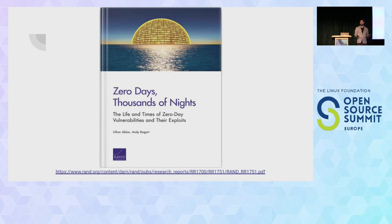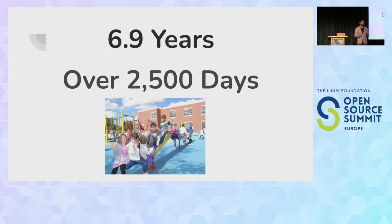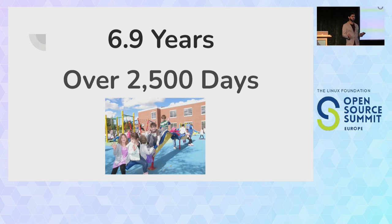I like to start off with this research paper, Zero Days, Thousands of Nights. It was an excellent research done on the nature of vulnerabilities — one of the most thorough studies into the lifespan of vulnerabilities in different technology stacks. One of the main conclusions was that the average zero day has a lifespan of about 6.9 years, which is over 2,500 days, hence the name Thousands of Nights.